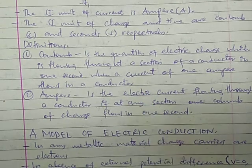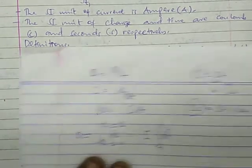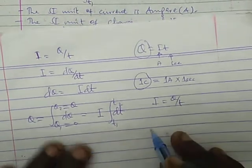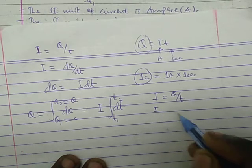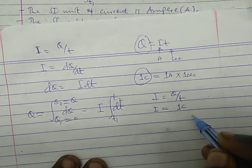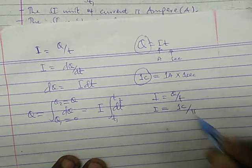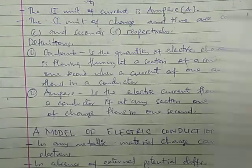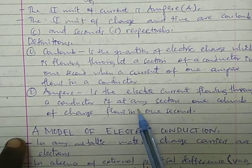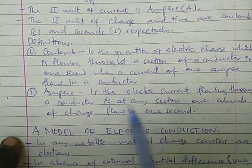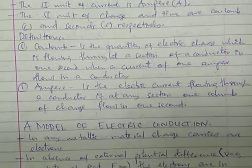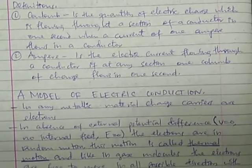The definition of an ampere: from I equals Q divided by T, an ampere is the current passing through a conductor when a charge of one coulomb passes through a conductor in one second. So the electric current flowing through a conductor is one ampere if, at any section, one coulomb of charge flows in one second.